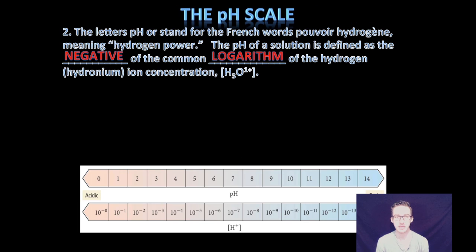So when we talk about the pH scale, we're talking about pH, it stands for the French words meaning hydrogen power. Again, we're talking about the powers or the exponents. Specifically, when we're talking about pH scale, we're talking about the negative of the common logarithm of the hydrogen or hydronium ion concentrations. So if we had pure water, which has a hydronium ion concentration of one times 10 to the negative seven, if you take the negative log of that concentration, again, we want to know what power do we have to raise 10 to to get one times 10 to the negative seven? The answer is seven.